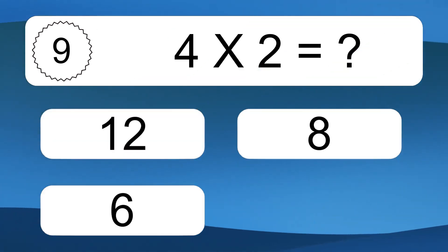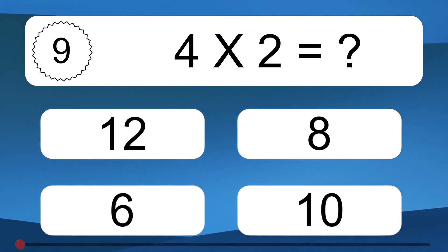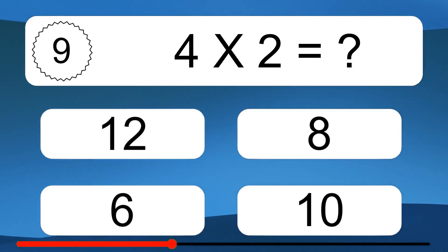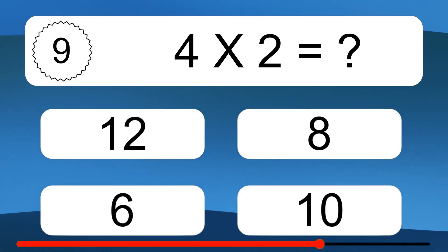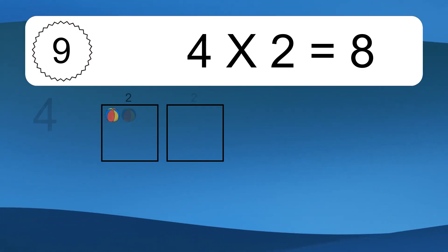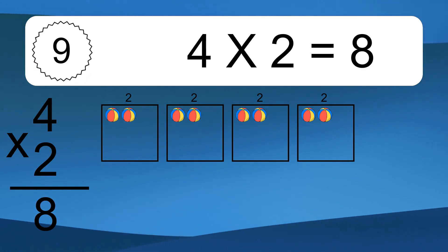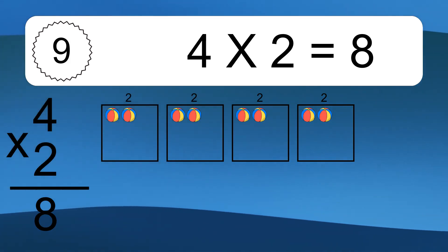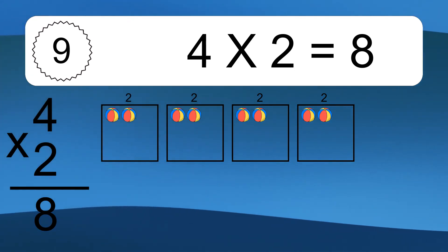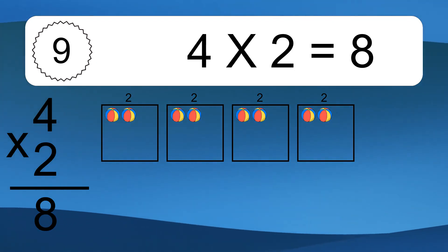4 times 2 equals what? 4 times 2 equals 8. We have 4 boxes, and each box has 2 colorful balls inside. If you count all the balls in all the boxes together, you will have 4 times 2 balls. This equals 8 balls.